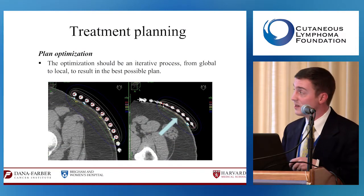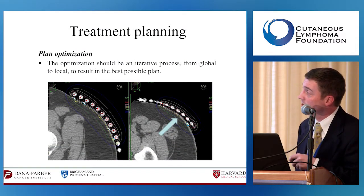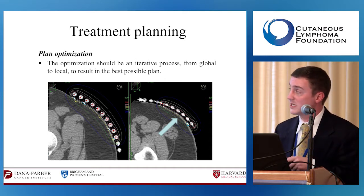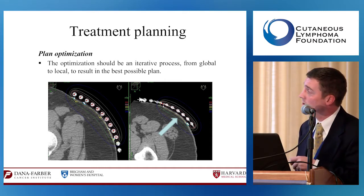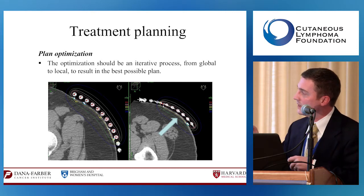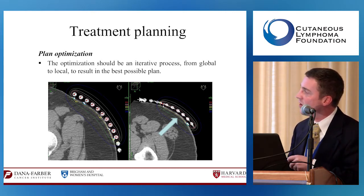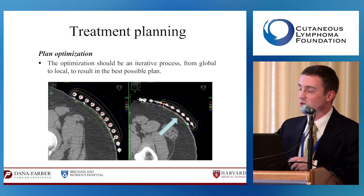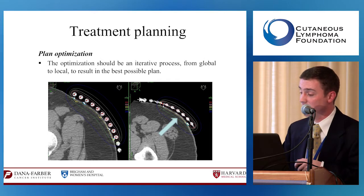A computer algorithm—what Dr. Devlin calls 'painting the dose onto the skin'—allows precise targeting. The isodose line ensures the dose is uniform throughout the treated region, and the 50% fall-off point marks where radiation no longer reaches, sparing normal tissues underneath.